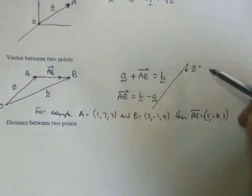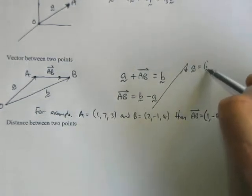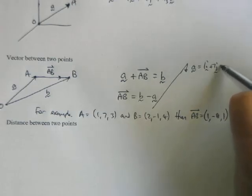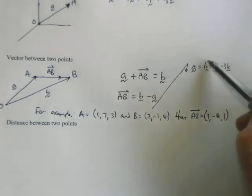What I should really have done is I should have said vector A is 1i plus 7j plus 3k.